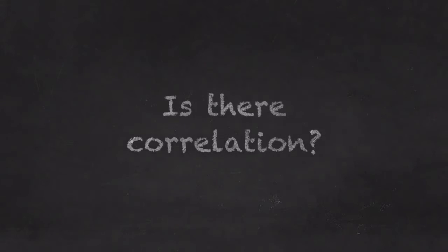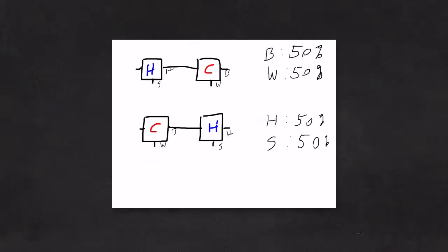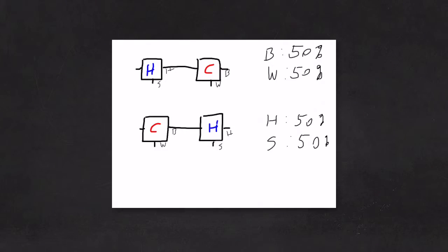We might ask ourselves if there's any sort of correlation — if we take an electron and run it through a hardness detector and it's found to be hard, does that give us any information about what color that electron might be? What we find is that there is no correlation. If we take a stream of electrons out of a hardness detector that are found to be hard, and then measure those same electrons with a color detector, we find that 50% are black and 50% are white. Likewise, if we take electrons from a color detector found to be black and run those into a hardness detector, we again find 50% hard and 50% soft.